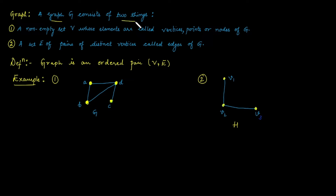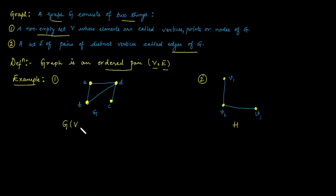A graph consists of two things: one is a non-empty set of vertices, and the second is called an edge set. In general, a graph is defined as an ordered pair of a vertex set and an edge set. For example, for graph G, the vertex set consists of all elements mentioned here — these elements are called vertices, points, or nodes. In this case, the vertices are A, B, C, and D.